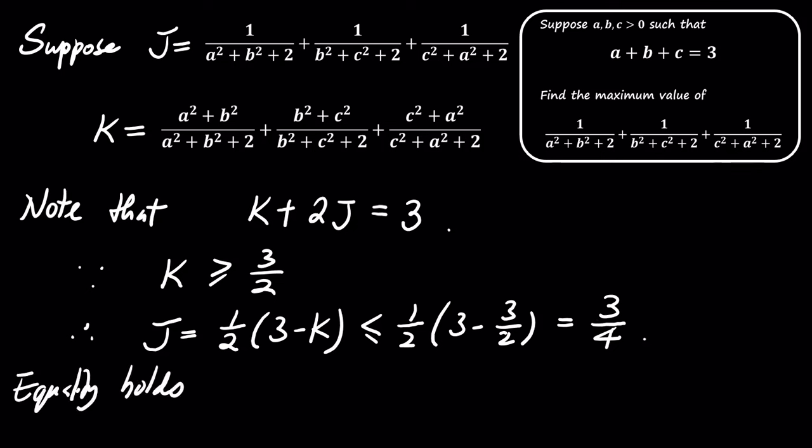Thus, the maximum value of J is 3 over 4, and this maximum is achieved when A equals B equals C equals 1.